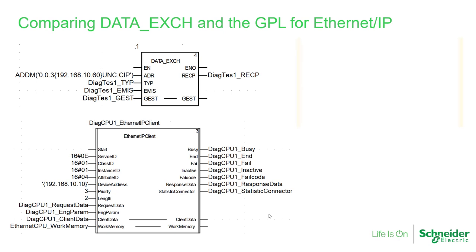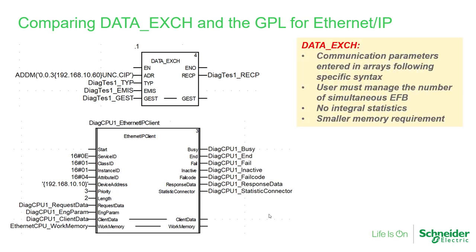Comparing the two methods: for the data exchange function block, communication parameters such as class, instance, and attribute must be passed to an array following a very specific syntax through the fourth input pin. Also, the user must manage the number of simultaneous queries being sent, so additional PLC programmer logic may be needed to control how the data exchange function blocks are triggered.